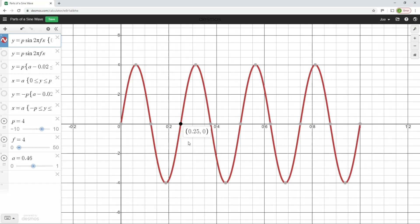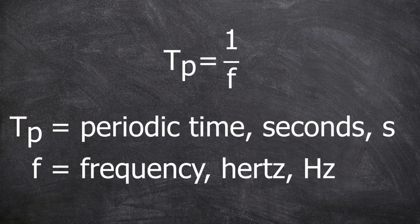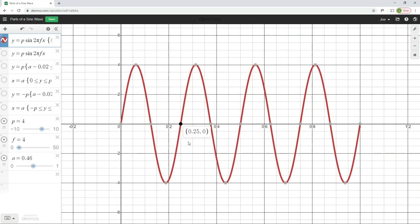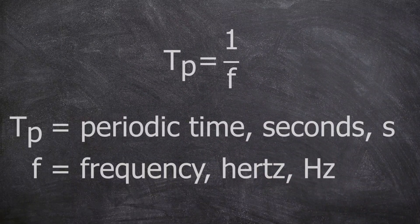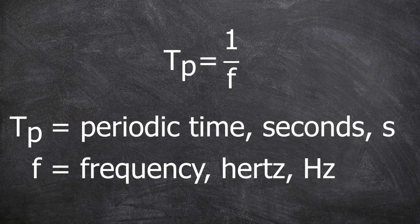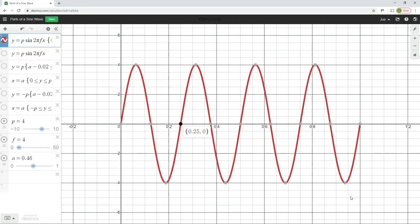There is also an alternative rearrangement of this formula: Tp equals one divided by f. All we've done is swap the periodic time and frequency values. On the screen with a frequency of four hertz, one second divided by four gives 0.25 — confirming that Tp equals one divided by f. So: f stands for frequency measured in hertz, and Tp stands for periodic time measured in seconds, with the unit symbol s.